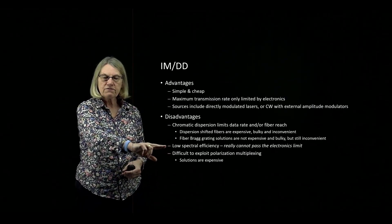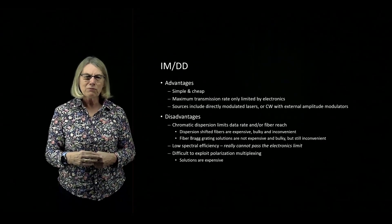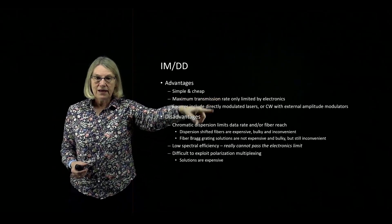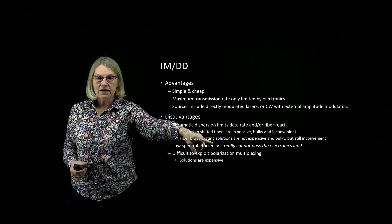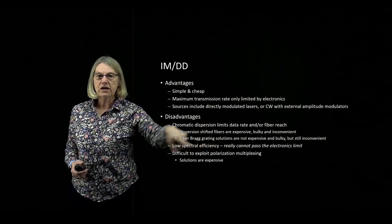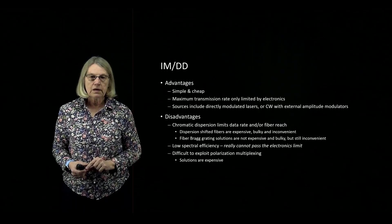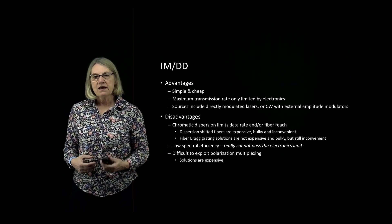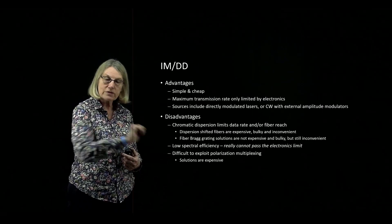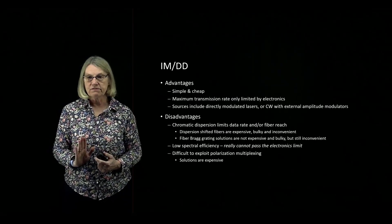IMDD also has fairly low spectral efficiency — how much information I can send in a given bandwidth. Although the transmission rate was only limited by electronic speed, coherent detection can get beyond this speed limit by increasing spectral efficiency. The last disadvantage of IMDD is that it is very difficult to exploit polarization multiplexing — to use the polarization of light to encode data. There are solutions, but they're very expensive and impractical.